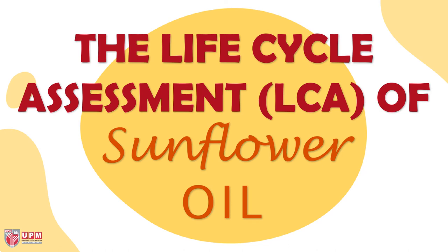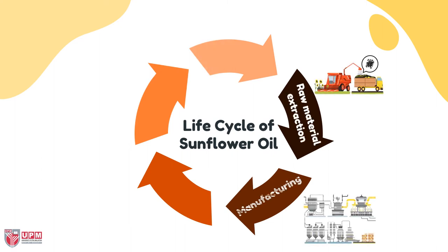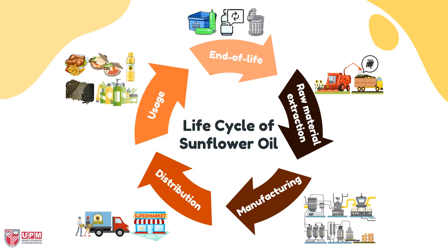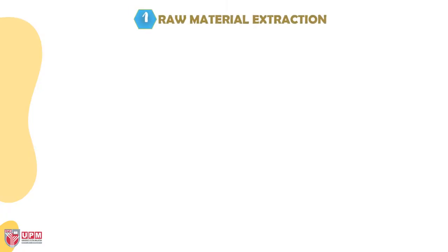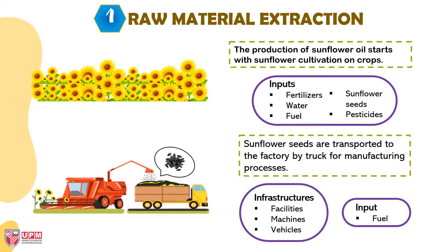Let's proceed with the life cycle assessment (LCA) of sunflower oil. The life cycle starts with raw material extraction, followed by manufacturing, distribution, usage, and end of life. At the raw material extraction stage, the production starts with sunflower cultivation on crops. The inputs are fertilizers, water, sunflower seeds, and pesticides. Sunflower seeds are then transported to the factory by truck for manufacturing.